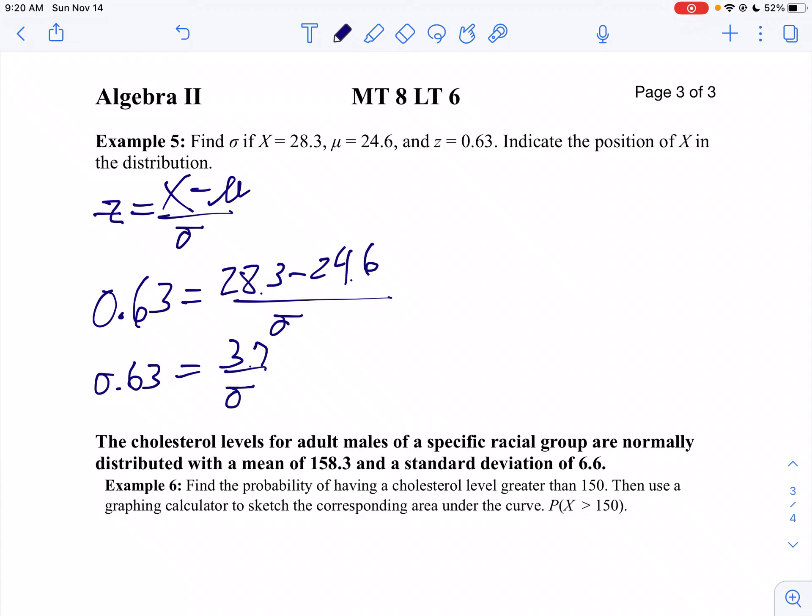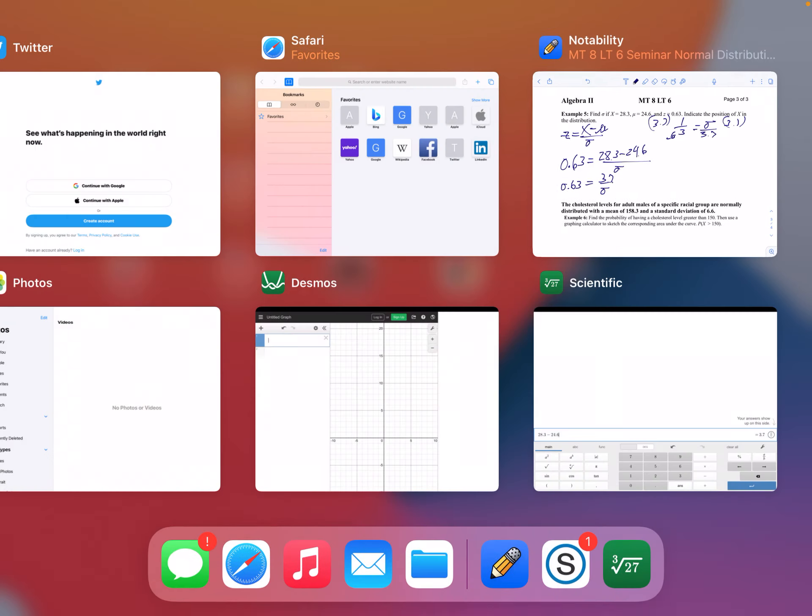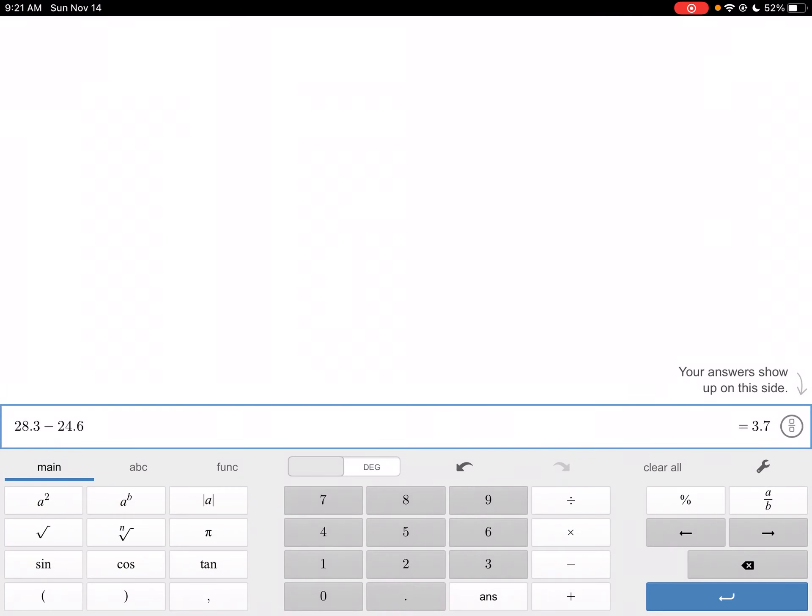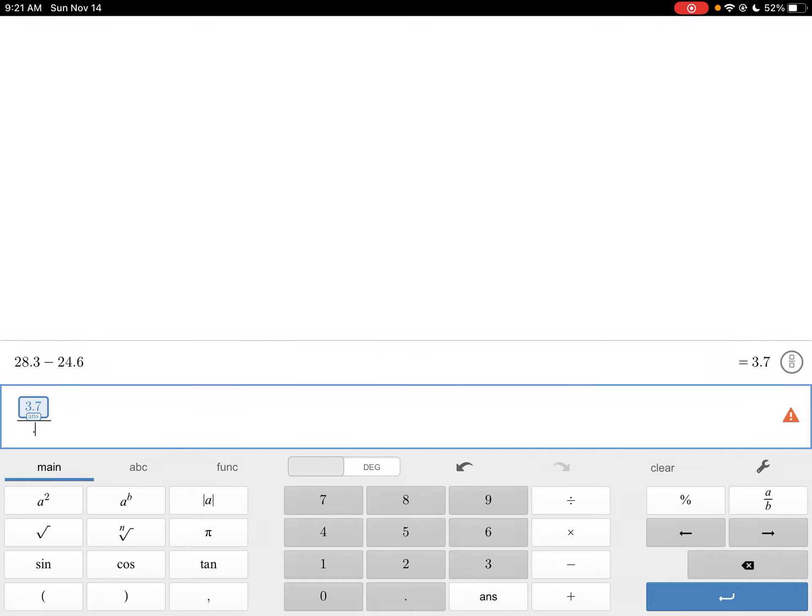Now I'm going to solve for the standard deviation, but I hate standard deviation being in the denominator. So I'm going to take the reciprocal of both sides. I'm going to say 1 over 0.63 equals my standard deviation divided by 3.7. Then to solve for the standard deviation, I'll multiply both sides by 3.7. So I take 3.7 divided by 0.63, and my standard deviation is 5.87.